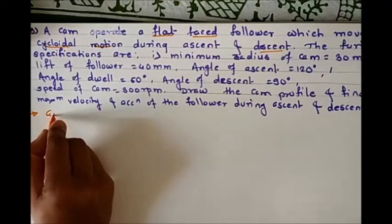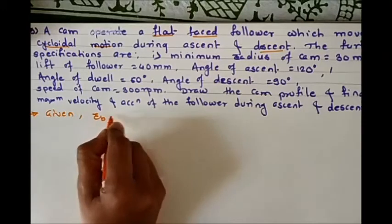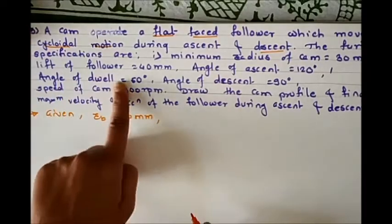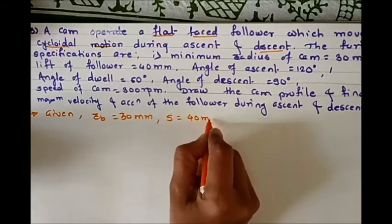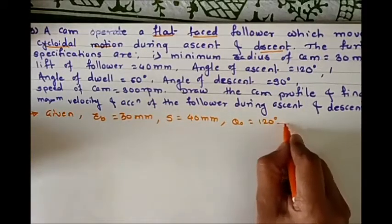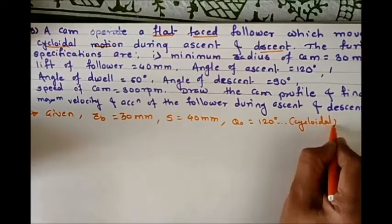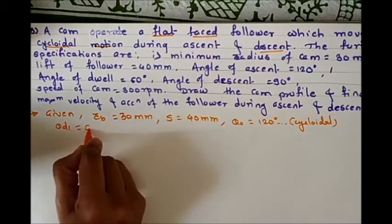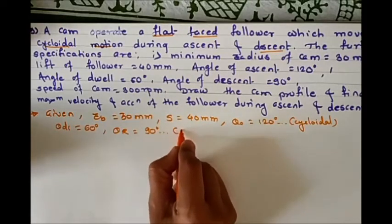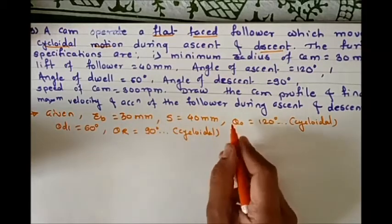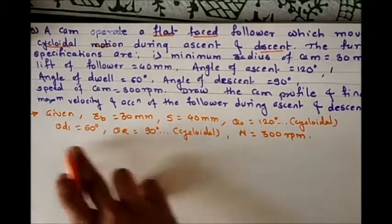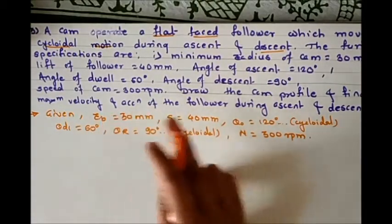The given data: minimum radius of cam rb is equal to 30 mm, lift of the follower s is equal to 40 mm, angle of ascent theta_o is equal to 120 degrees with cycloidal motion, angle of dwell theta_d1 is equal to 60 degrees, angle of descent theta_r is equal to 90 degrees with cycloidal motion, and speed of cam is 300 rpm. We are asked to draw a cam profile and find maximum velocity and acceleration during ascent and descent.